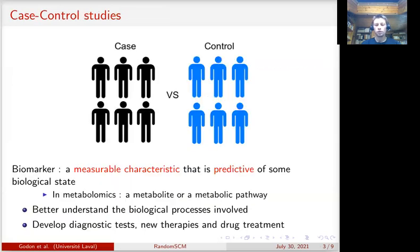Data come from case control studies, where half of the patients represents the phenotype of interest. For example, they suffer from a certain disease. And the other part are healthy controls.